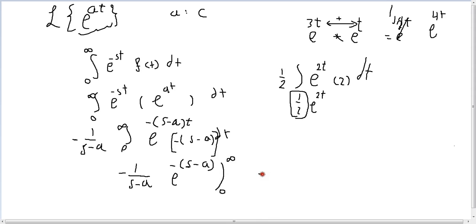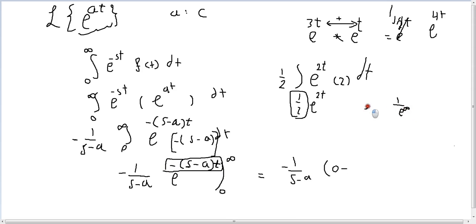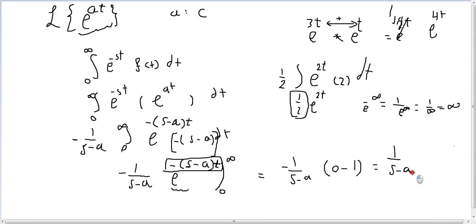When we plug in t equals infinity, the term becomes e^(-infinity), which equals 1 over e^(infinity), which equals 1 over infinity, which equals zero. So the whole term at the upper limit is zero. When we plug in t equals zero, e^0 equals 1, so that term becomes minus 1 over (s minus a) times 1, giving us 1 over (s minus a).